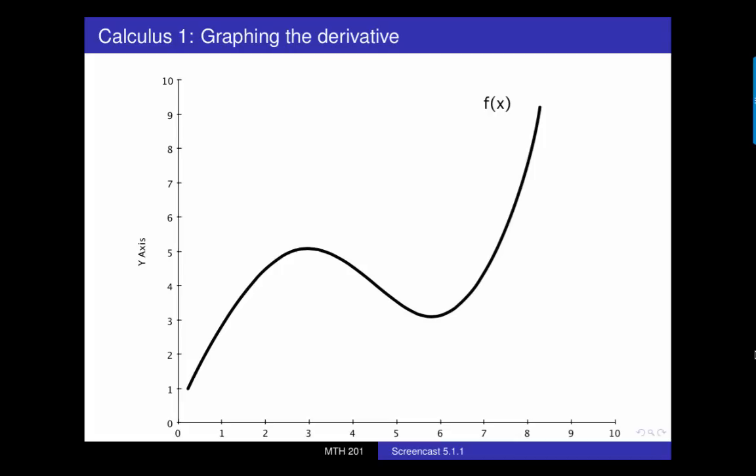So in calculus one, you learned how to draw the graph of the derivative of a function given the graph of the original function. You did this by realizing that if our original function is called f, then the derivative f prime tells us the slope of the tangent line to the graph of f at a point, or alternatively, f prime tells us the instantaneous rate of change in f at a point.